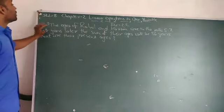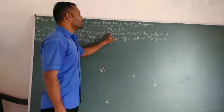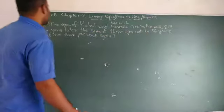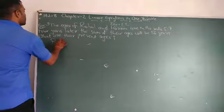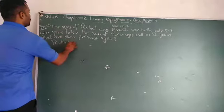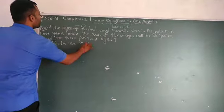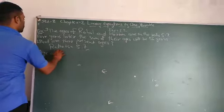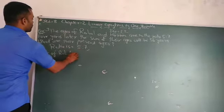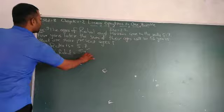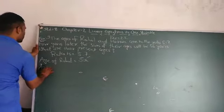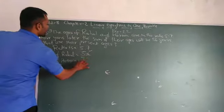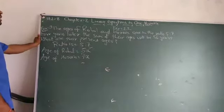The question is: the ages of Rahul and Harun are in the ratio of 5 to 7. So the ratio is 5 to 7. Age of Rahul is equal to 5x, and age of Harun is equal to 7x.